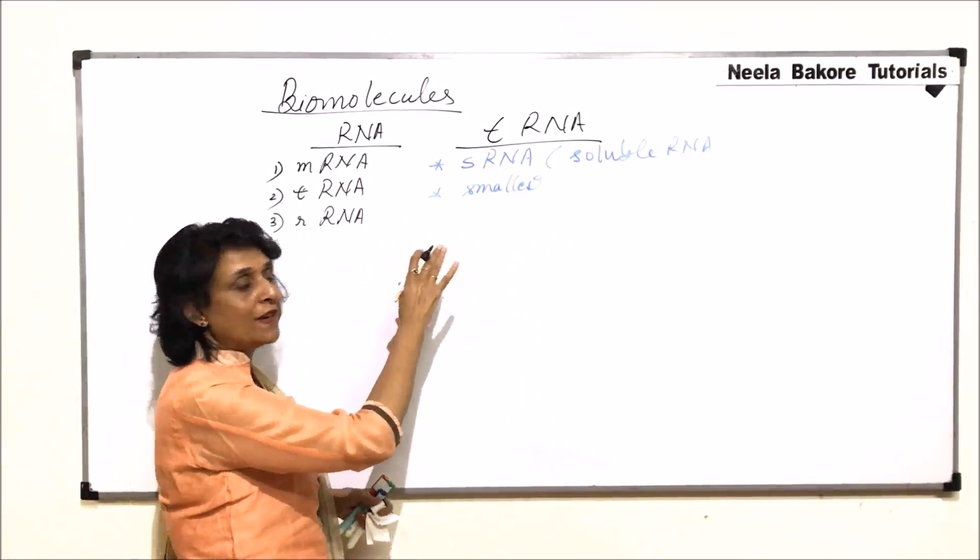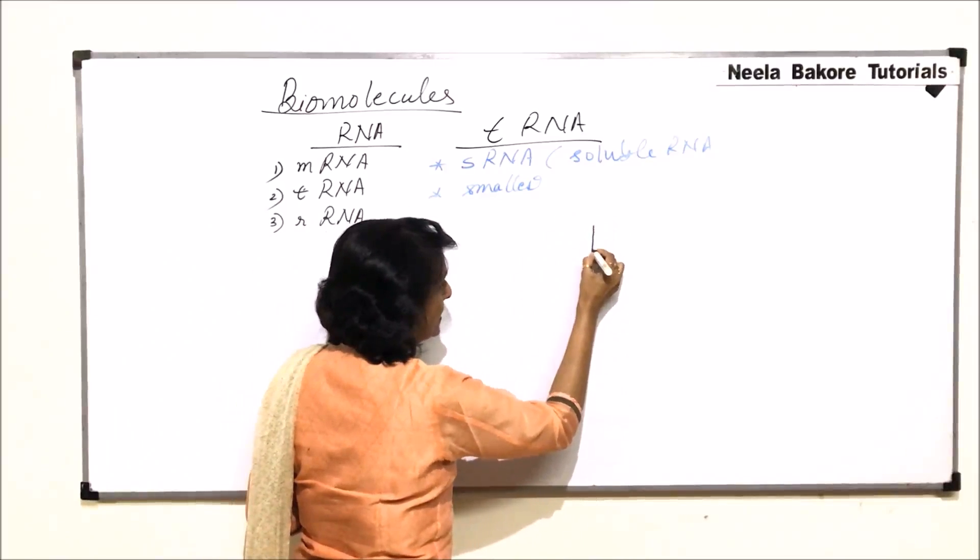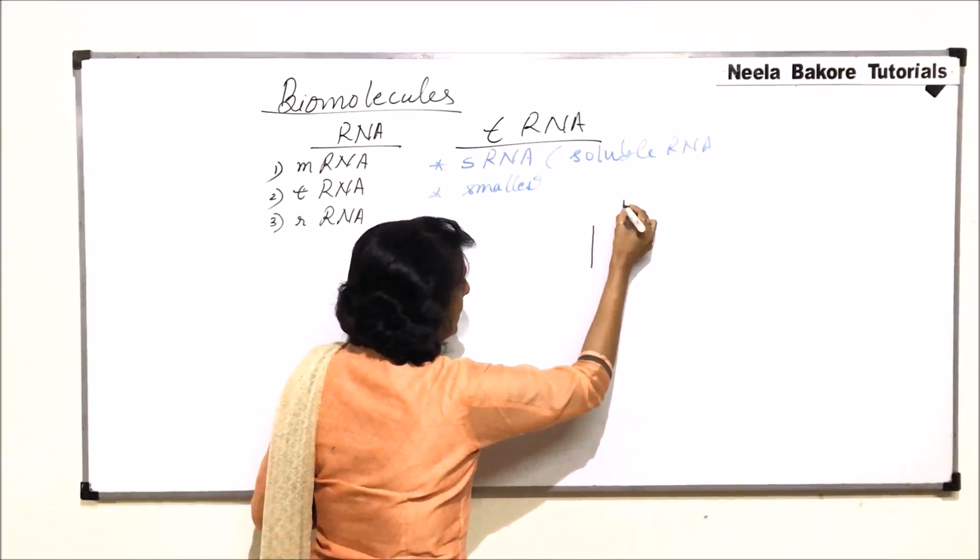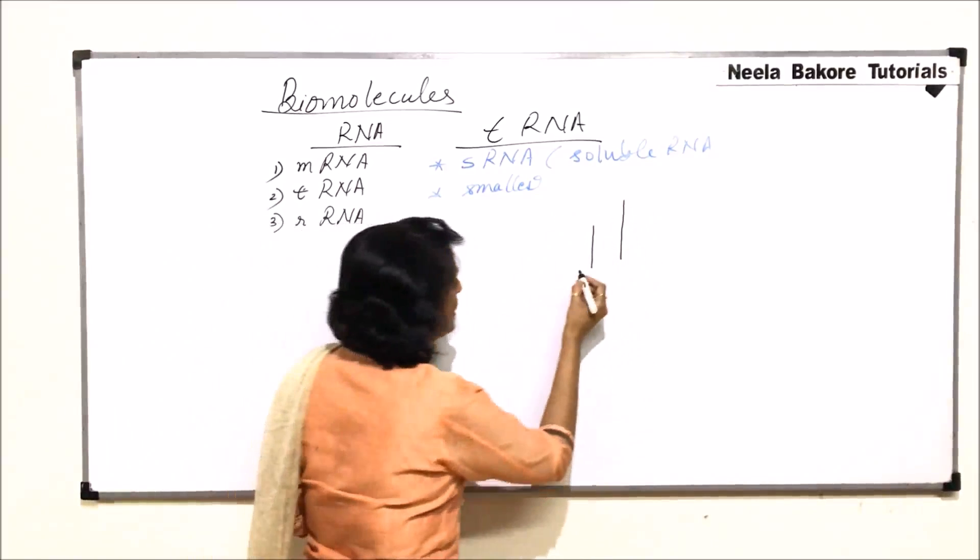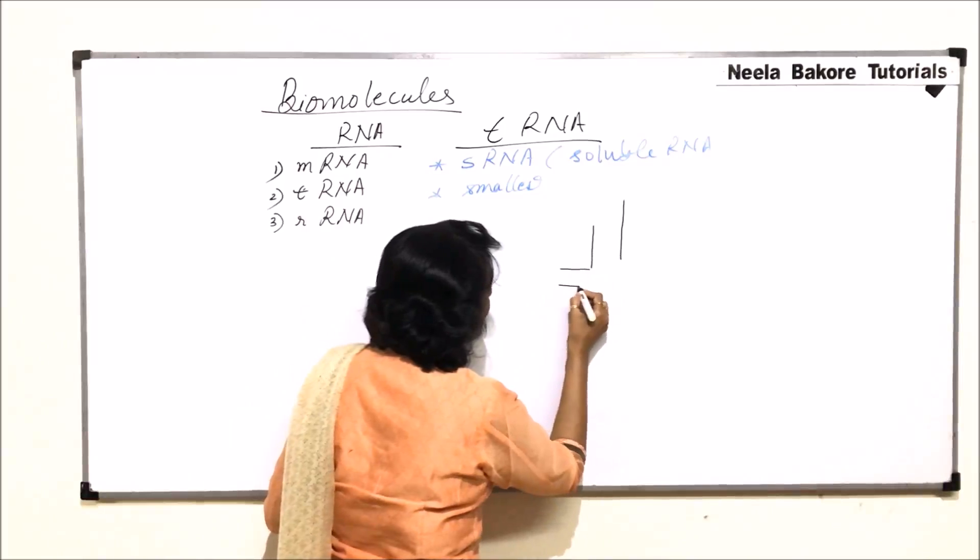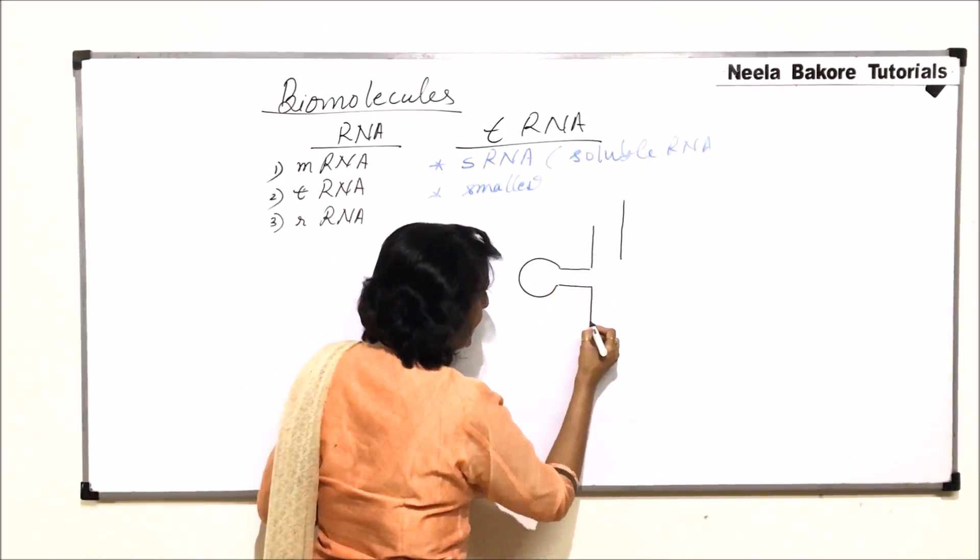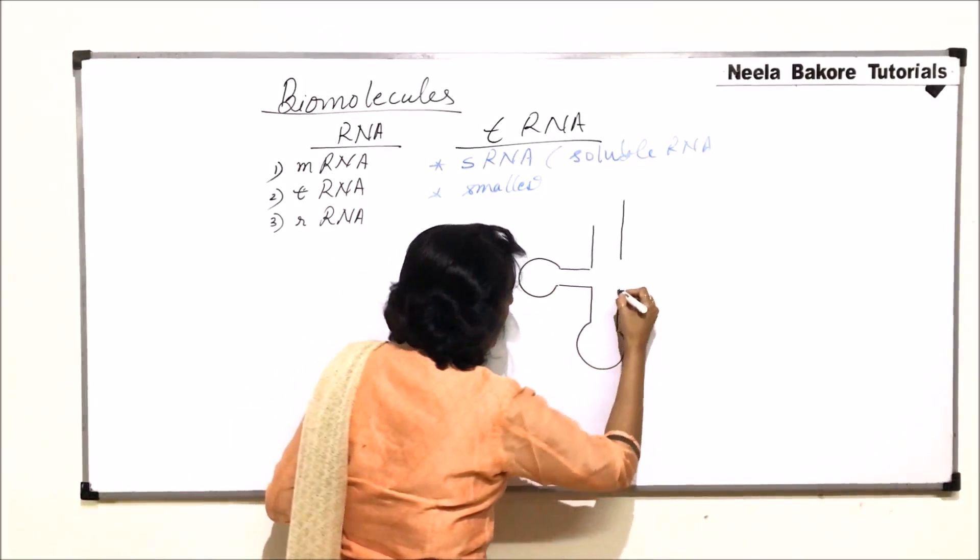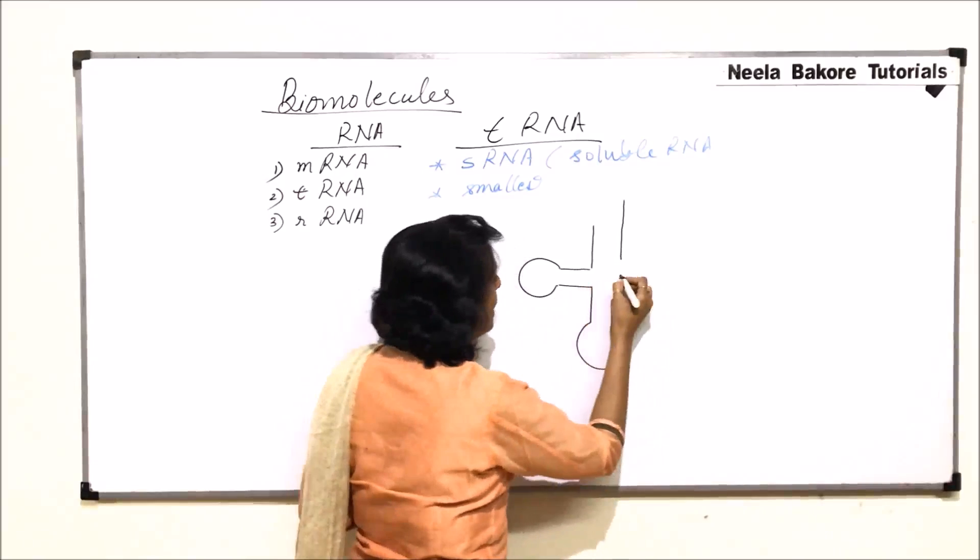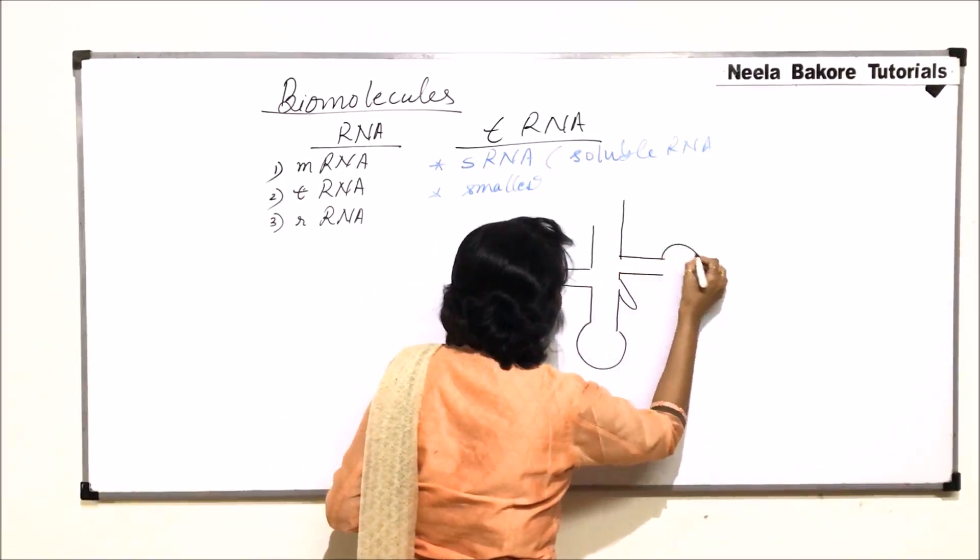It is a clover leaf like structure. It is a single stranded structure but there is appearance of three loops and that's why we call it clover leaf like structure. Here is one loop, then there is one loop which is on the lower side, a small non-functional arm, and one more loop which is on this side.